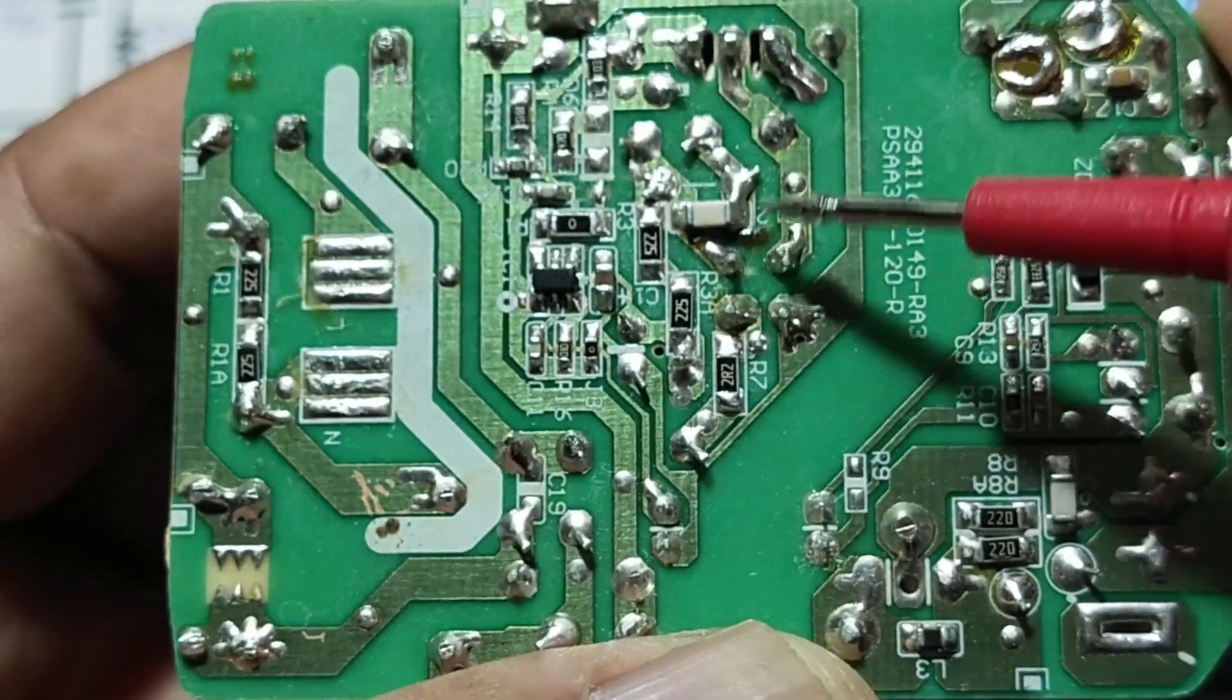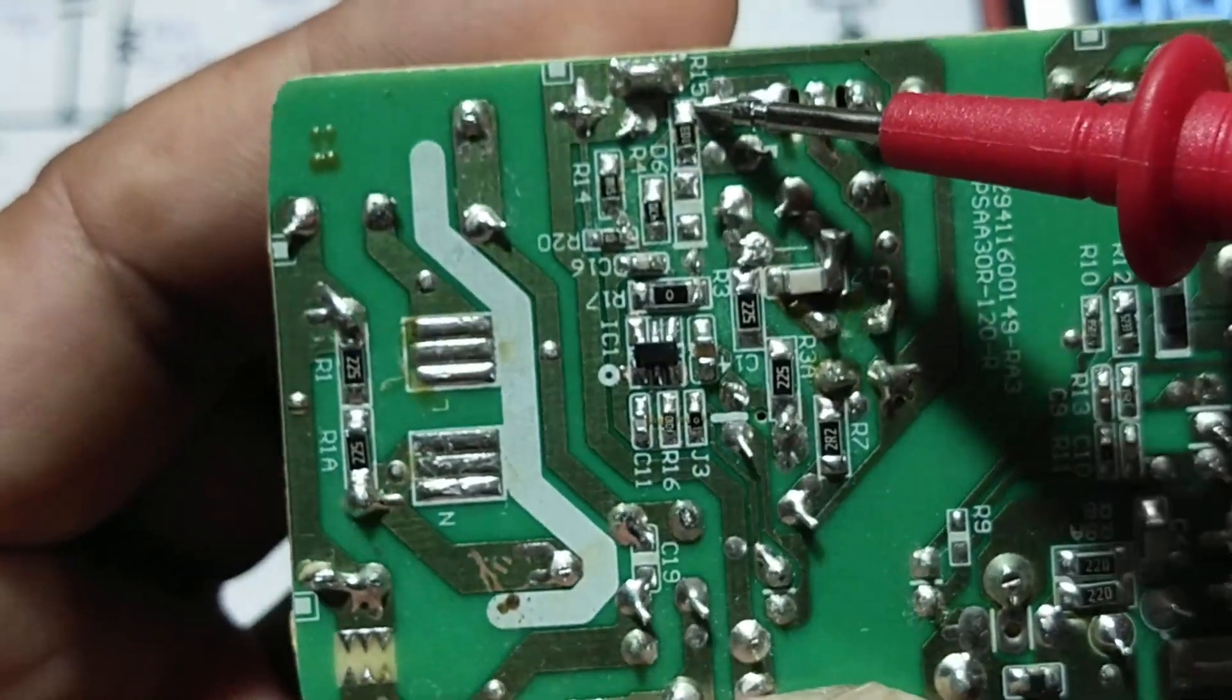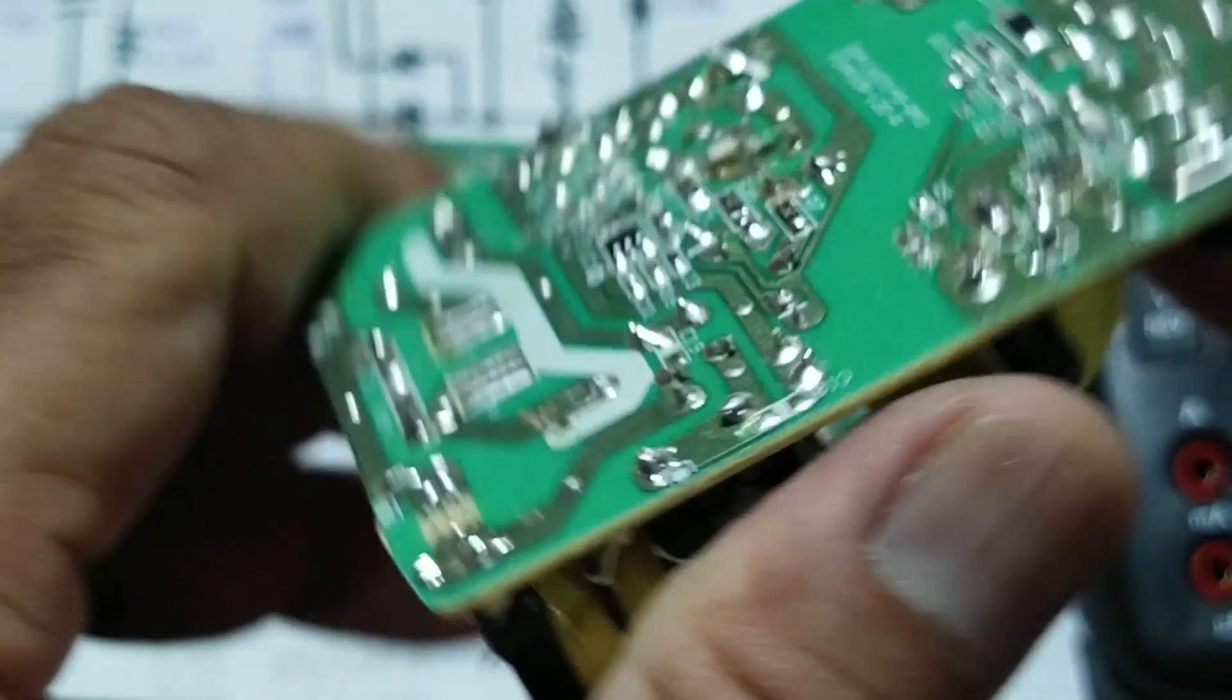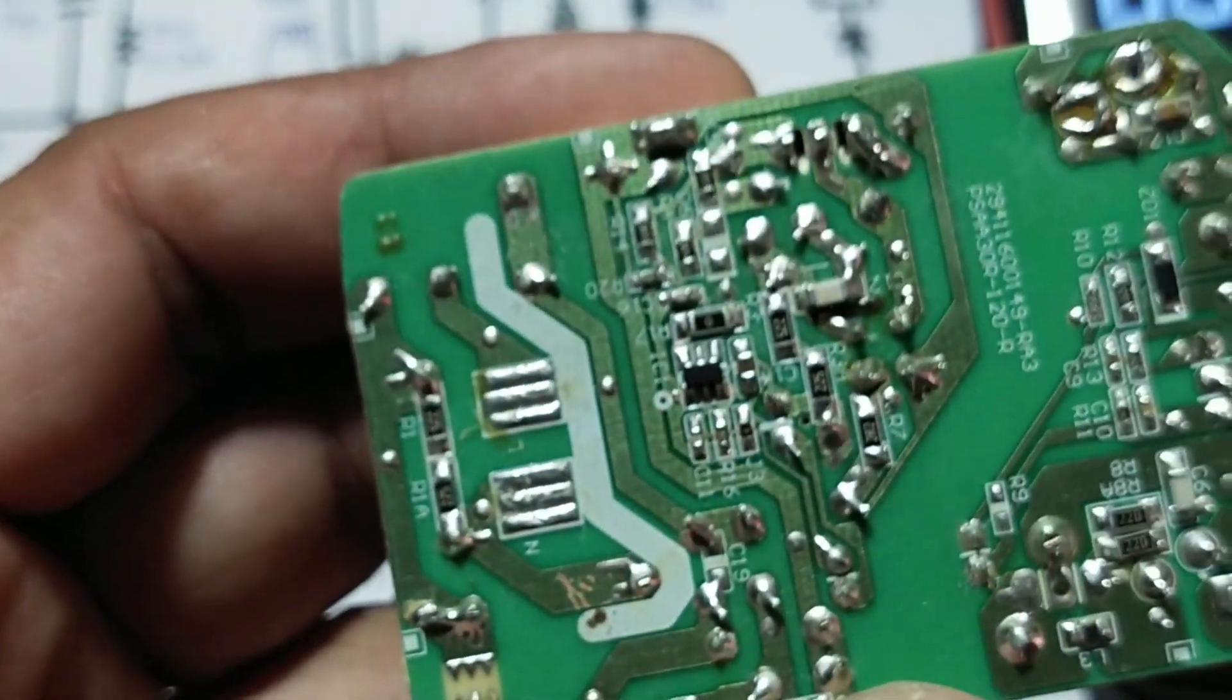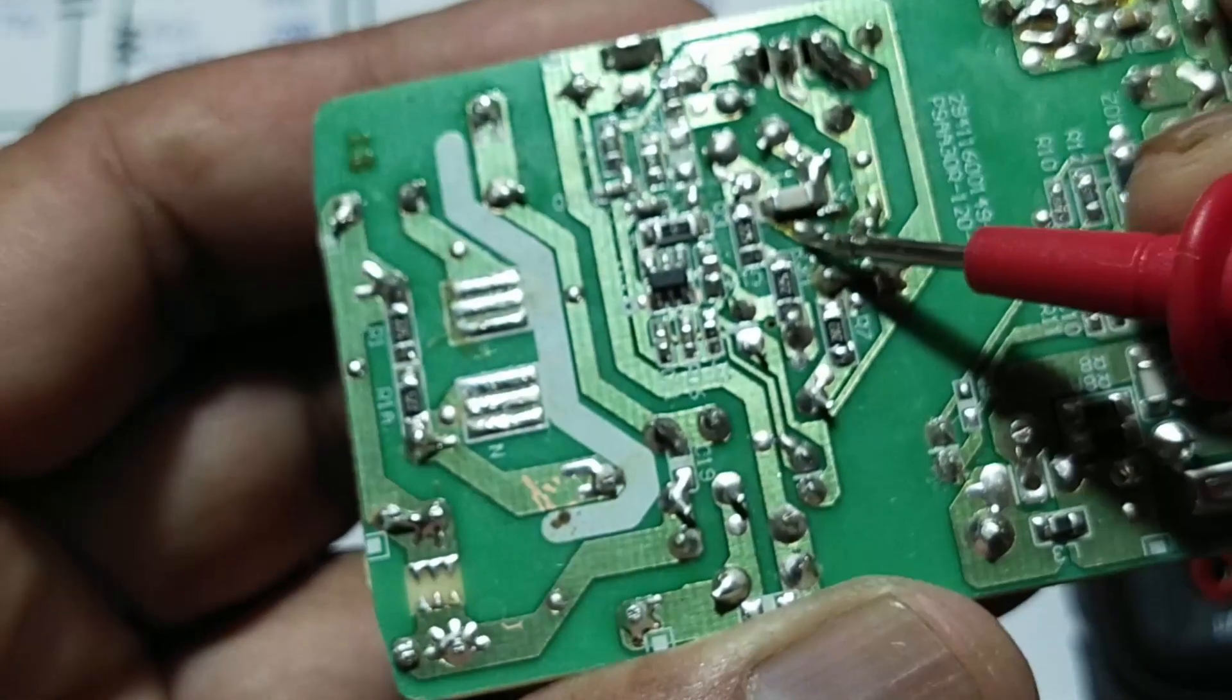The positive line reaches from here to here, and negative line goes through this resistor, current sensor resistor that is inside here to the MOSFET source, and the drain of the MOSFET is connected to transformer primary winding.